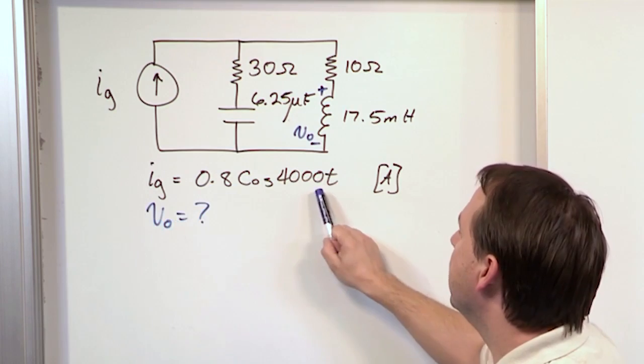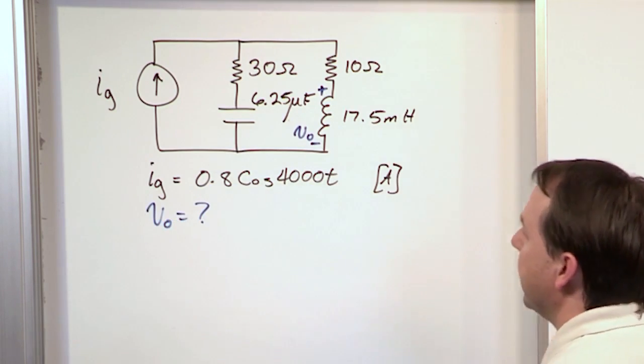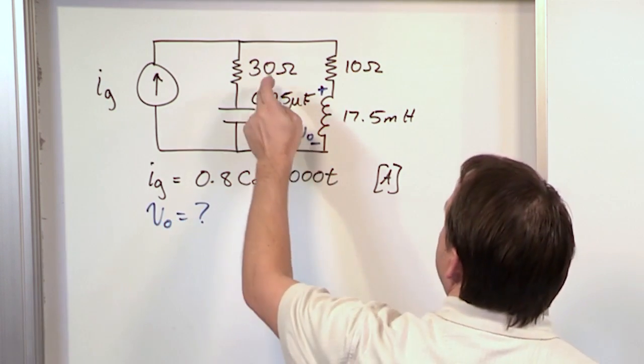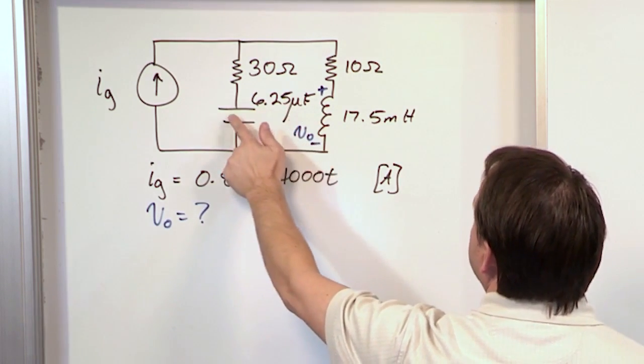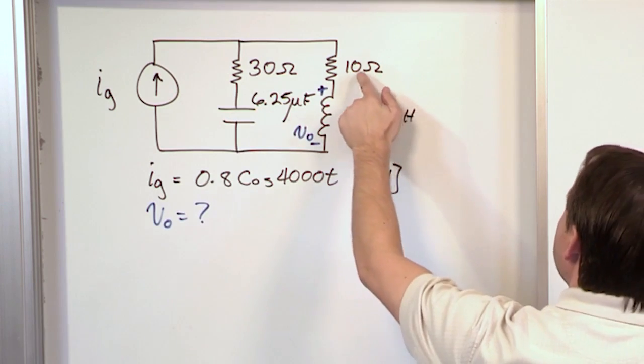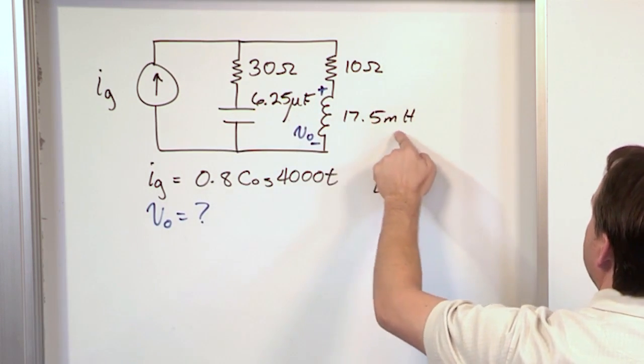Notice there is no phase angle here. The frequency is 4000 radians per second. And basically we have 30 ohms in series with a capacitor 6.25 microfarads, that's this guy. And then we have 10 ohms in series in this leg with 17.5 millihenries.